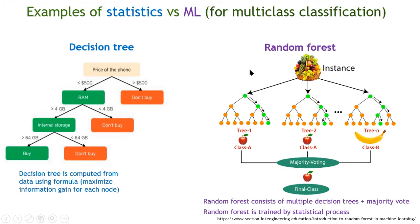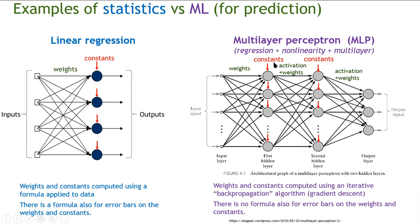Another example of statistics versus machine learning is linear regression versus multilayer perceptron. The multilayer perceptron is the basic structure of deep learning, where data is passed from level to level using weights and activation functions. Linear regression takes inputs, multiplies them by weights, takes linear combinations, adds constants, and produces predictions — you can take multiple inputs and produce multiple outputs.